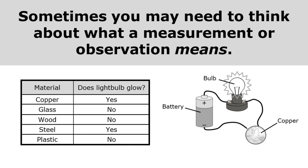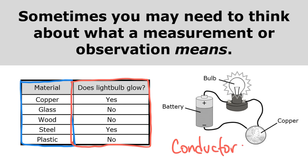Sometimes you may need to think about what a measurement or observation means. In this simple investigation, I changed the material that was used to complete the circuit, and I observed whether or not each material caused the light bulb to glow. But this investigation wasn't really about which materials make the light bulbs glow — it was about which materials allow electricity to flow through the circuit. So I'm really investigating which materials are good conductors. That's what the observation means, and sometimes you have to think about what the observation is really telling you.